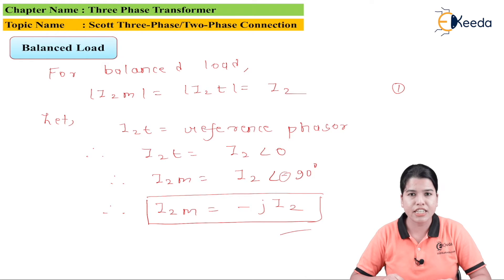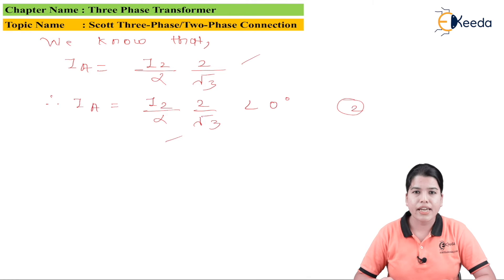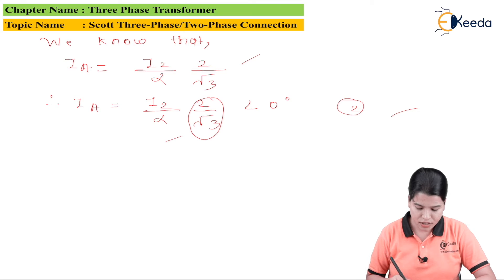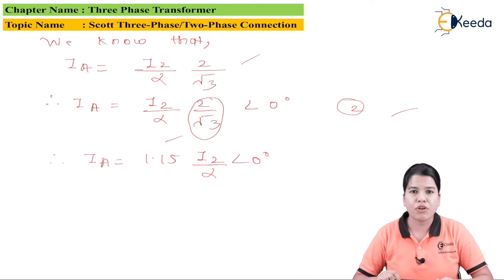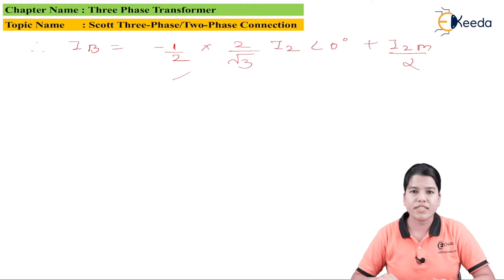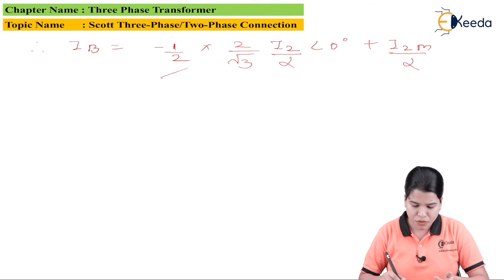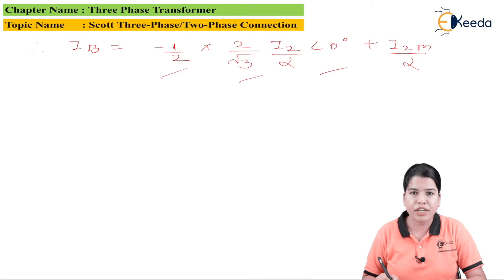The current IA is given by: IA equals I2 divided by alpha multiplied by 2 divided by root 3. In polar form, IA equals I2 divided by alpha times 2 divided by root 3 at an angle of 0 degrees, which equals 1.15 times I2 divided by alpha at an angle of 0 degrees. The formula for IB is: IB equals minus half IA plus I2M divided by alpha. Substituting IA: IB equals minus half times 2 by root 3 times I2 divided by alpha at 0 degrees plus I2M divided by alpha.